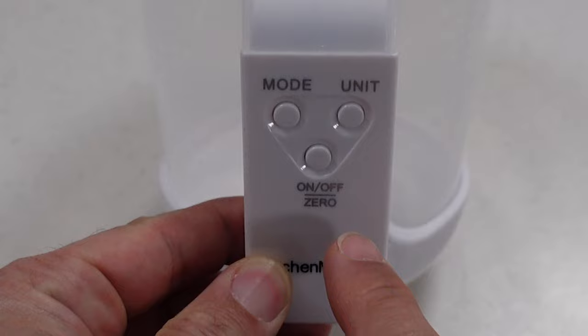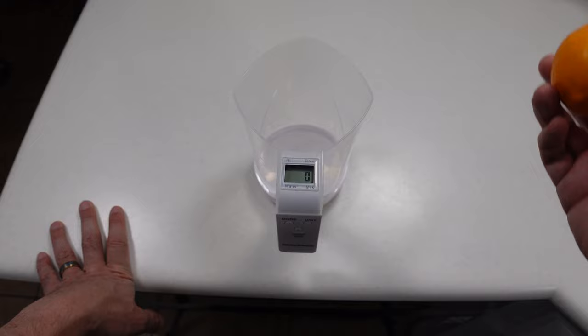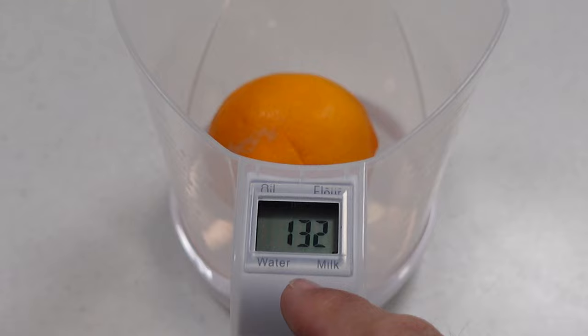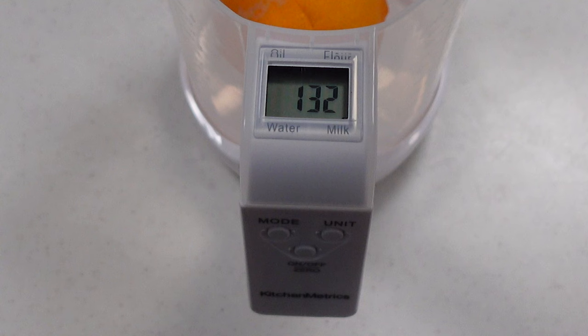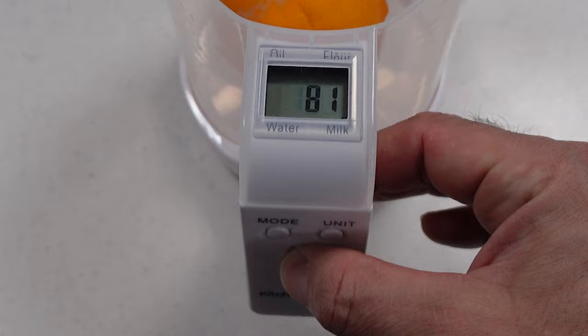The way the zeroing function works is let's say you have this lemon here and you want to put this in the measuring cup. You can see that this weighs 132 grams. Let's say you want to add some other stuff in here but you don't want to take into account the weight of the lemon itself. Instead of taking the lemon out, you could just zero this out by pushing that power button again, and you'll notice that this is zero grams again even though the lemon is still in there.